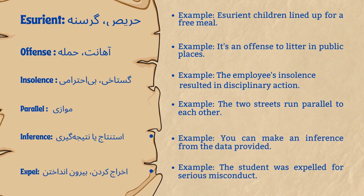Esurient. Example: esurient children lined up for a free meal. Offence. Example: it's an offence to litter in public places. Insolence. Example: the employee's insolence resulted in disciplinary action. Parallel. Example: the two streets run parallel to each other.